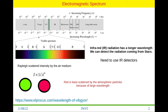Similarly, in the lower wavelength side: the lowest wavelength in the visible region is violet. If you go further into the lower wavelength region, it is called ultraviolet. Then if you go further into lower wavelength, it becomes X-ray and then gamma rays.